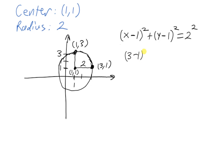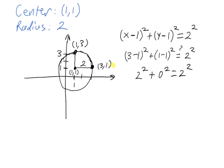Plugging in x equals 3: (3 minus 1) squared, plus plugging in y equals 1: (1 minus 1) squared — does that equal 2 squared? The answer is yes, because 3 minus 1 is 2, so that's 2 squared, plus 1 minus 1 is 0, so 0 squared. So 4 plus 0 equals 4, which is indeed 2 squared. This point worked. And you'd find that plugging in (1, 3) would work fine as well.